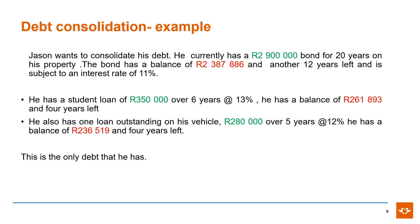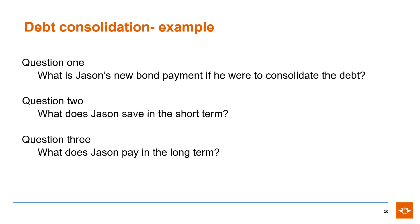Jason wants to consolidate his debt. He currently has a R2.9 million bond, a R330,000 student loan, and a vehicle loan of R280,000. You are also given the interest rates, the term, and the outstanding balances of each loan, and this is the only debt that he has. Calculate the following: Question 1 — What is Jason's new bond payment if he were to consolidate his debt? Question 2 — What will Jason save in the short term in terms of monthly payments? Question 3 — What does Jason pay in the long term?